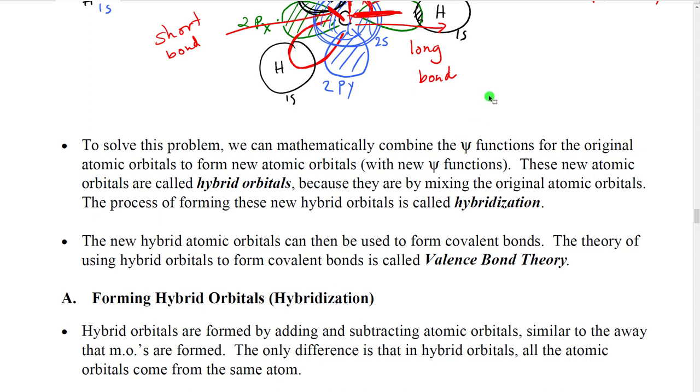So this is different from the molecular orbital where we took a function from one atom and combine it with a function from a different atom. Let's just take two functions from the same atom, add them, subtract them, combine them together mathematically, and create a new psi function. Those new psi functions would define new atomic orbitals and we call them hybrid orbitals because they're mixtures of the original atomic orbitals. And the process of forming those new hybrid orbitals was called hybridization. That process actually just involved mathematical calculations.